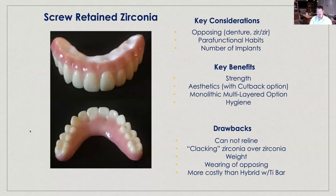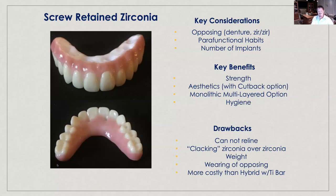Here is a zirconia device. Most of you are familiar with this product — this is all zirconia, and it is one of the more common types of final devices. The advantage is that it is very hard and very difficult to break, making it a great choice for heavy bruxers. The disadvantage is that it is more costly than the acrylic option, and very difficult to repair.